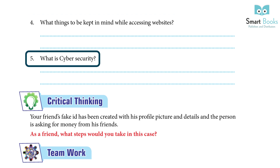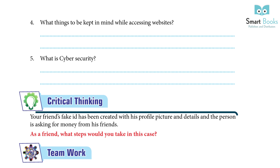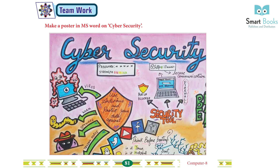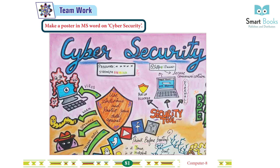5. What is cyber security? — Any computer connected to the internet is exposed to a wide variety of technological dangers. Cyber security tries to protect sensitive data — including the confidentiality, integrity, and accessibility of important data kept on computers. Critical thinking: your friend's fake ID has been created with his profile picture and details, and the person is asking for money from his friends — as a friend, what steps would you take? Ask students to do it by themselves. Team work: make a poster in MS Word on cyber security — ask students to do it by themselves.